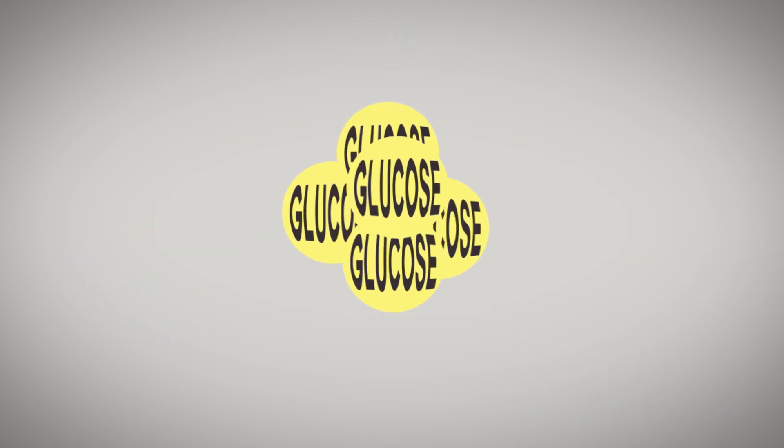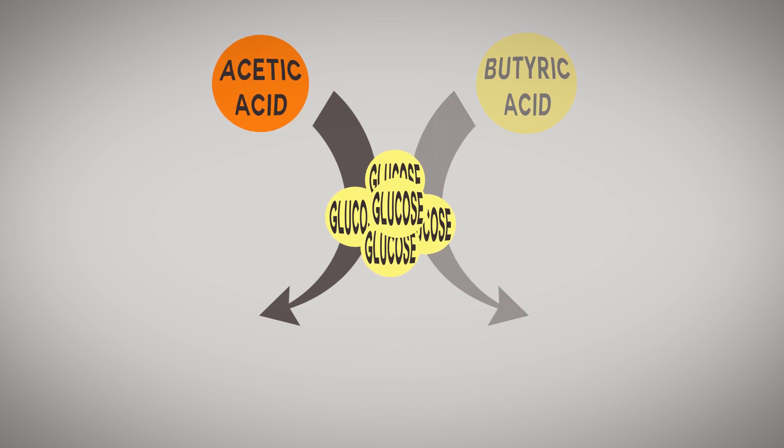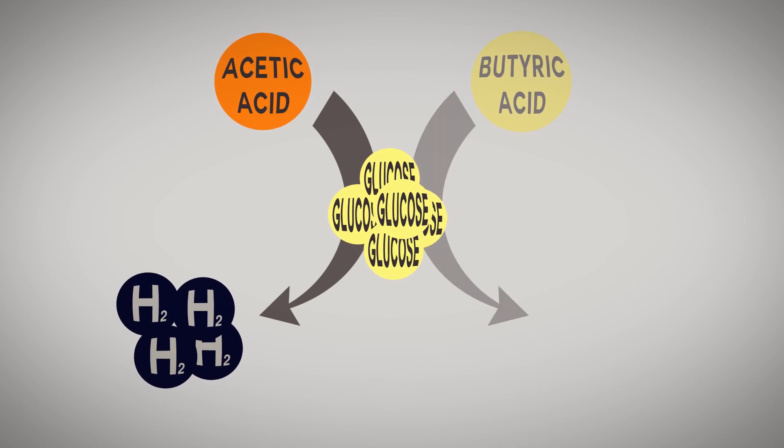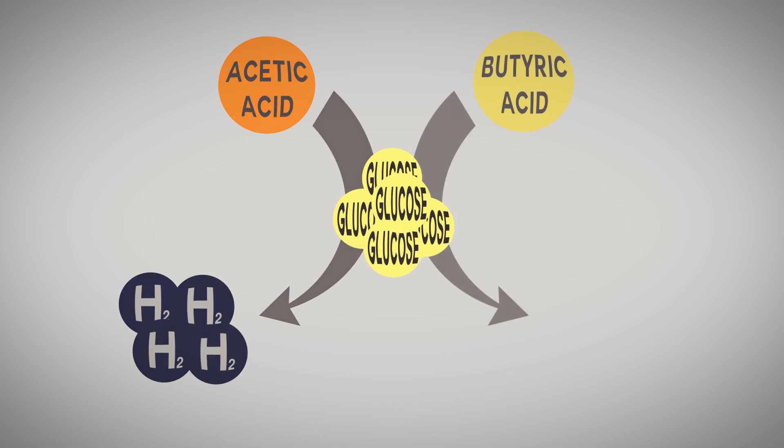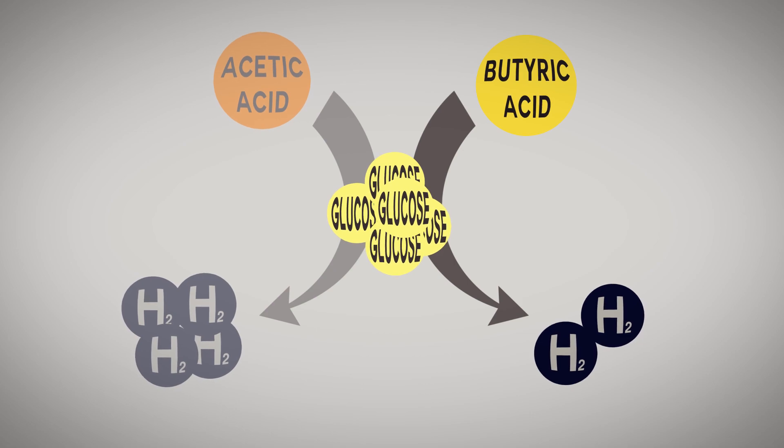The glucose form is topped to the formation reaction of acetic acid and butyric. Theoretically, there will be 4 moles of hydrogen per mole glucose from acetic acid, but only 2 moles of hydrogen per mole of glucose are formed if they are derived from butyric acid.